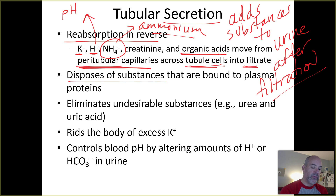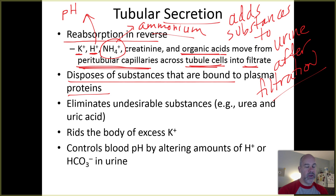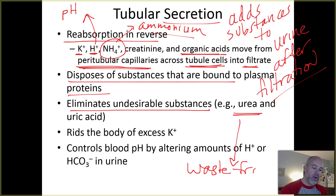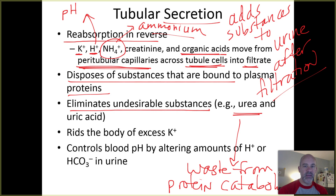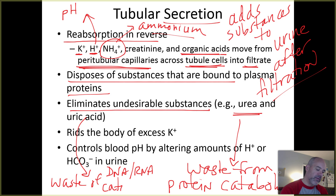Tubular secretion can also dispose of substances attached to plasma proteins — some plasma proteins transport various substances in the blood, and tubular secretion can discard those substances. It also eliminates undesirable waste substances: urea, a waste from protein catabolism, and uric acid, a waste from nucleic acid (DNA and RNA) catabolism — when those molecules are broken down, uric acid is one of the waste products.